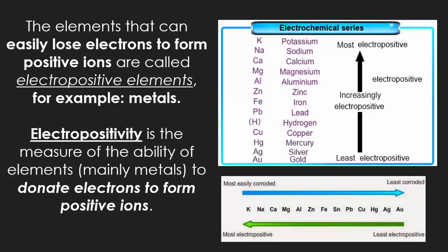Metals will all form positive ions. Electropositivity is the measure of the ability of an element to donate electrons to form those positive ions. If you look at the electrochemical series, which we'll talk about later in the year — also found on Table J — the more electropositive you are, the more likely you're going to be giving up those electrons, or the more reactive you are.